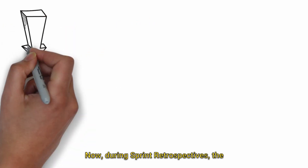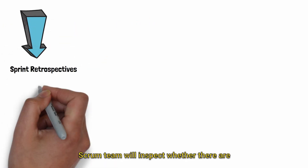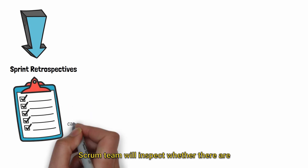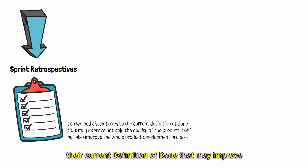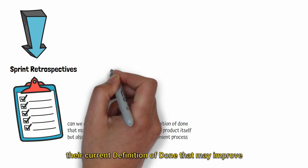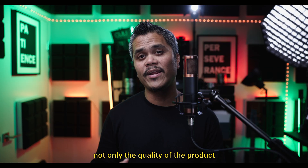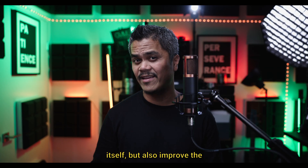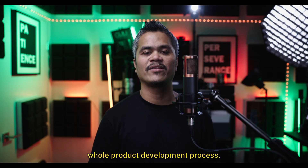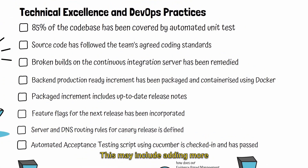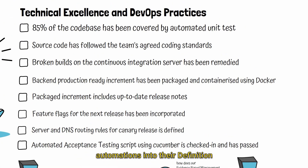During the sprint retrospective, the scrum team will inspect whether there are additional checkboxes that can be added to their current definition of done that may improve not only the quality of the product itself but also the whole product development process — for example, adding more automations into their definition of done.